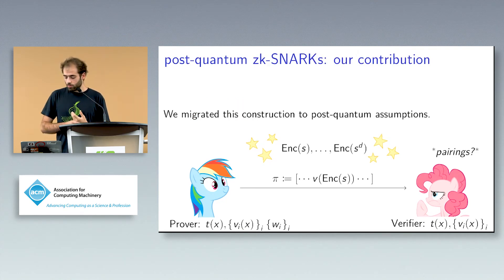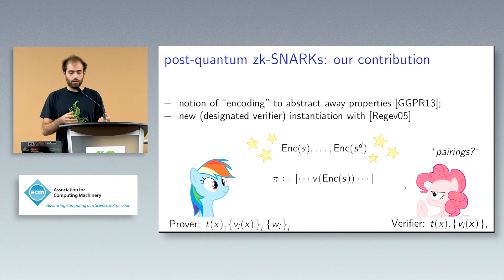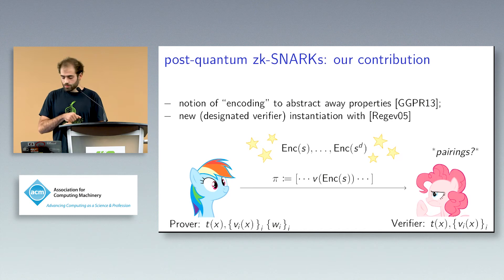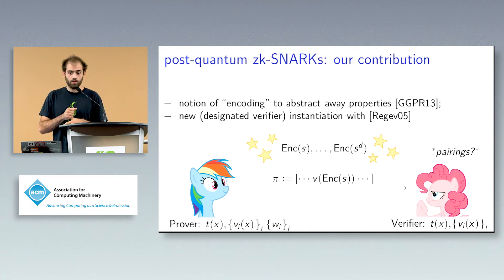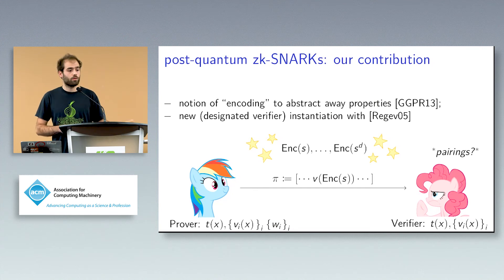So what did we do? We basically took this protocol, this zero knowledge SNARK that was done on square span programs and we brought it to post-quantum assumption. So what we more formally did was we sort of brought this protocol to the notion of encoding that was done by Gennaro and others in 2013. We changed it a bit, this notion of encoding to accommodate for the noisy nature of lattice encodings. And then we provided an easy instantiation of it with Regev encryption.